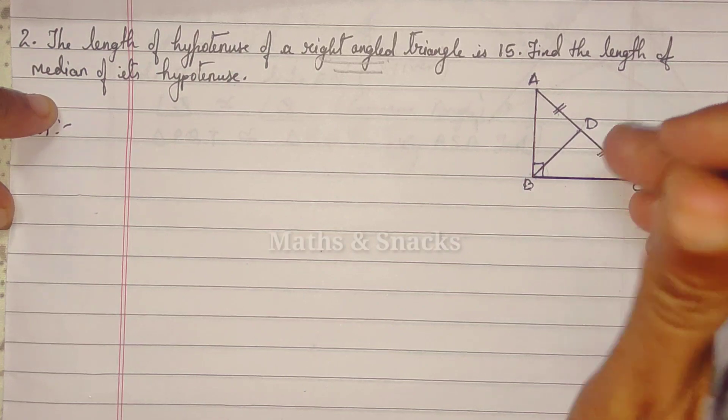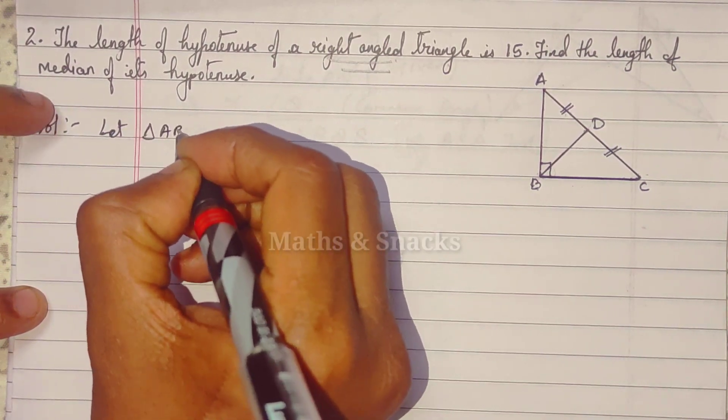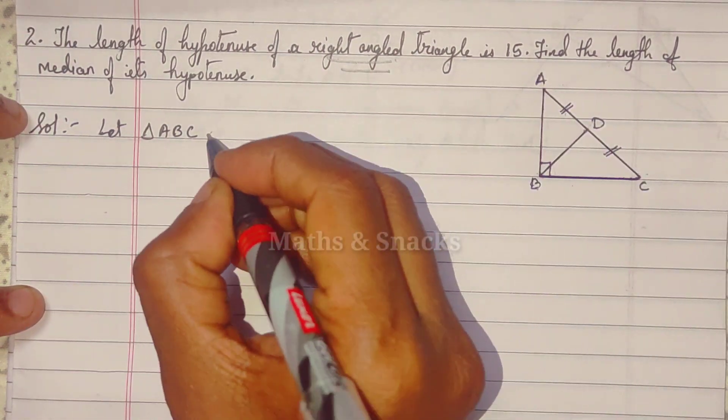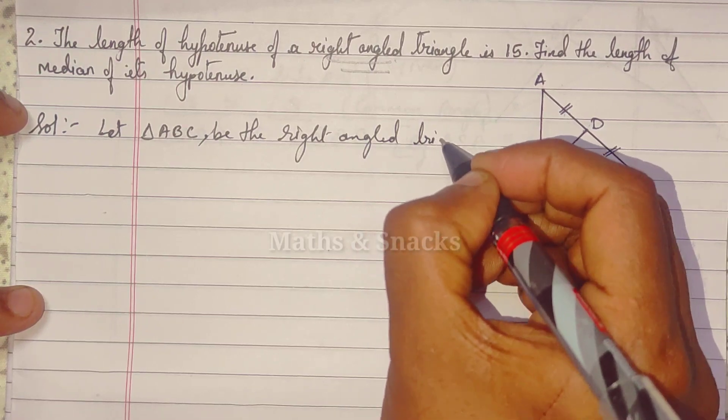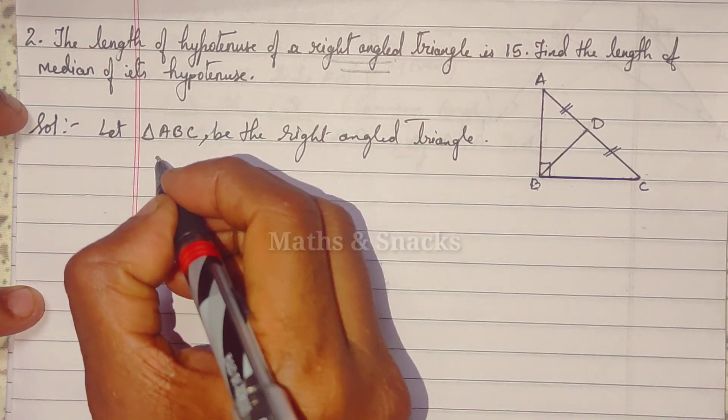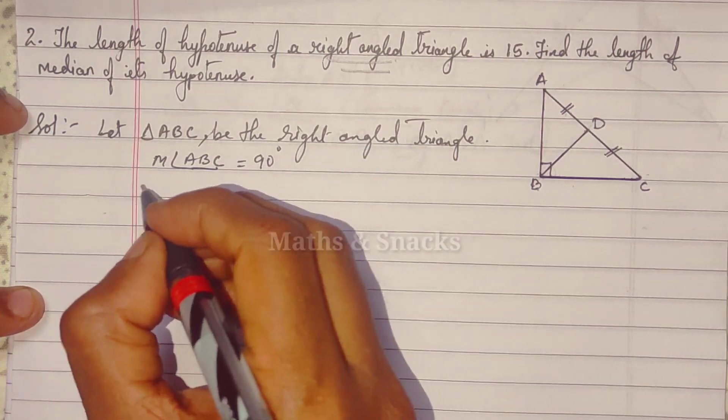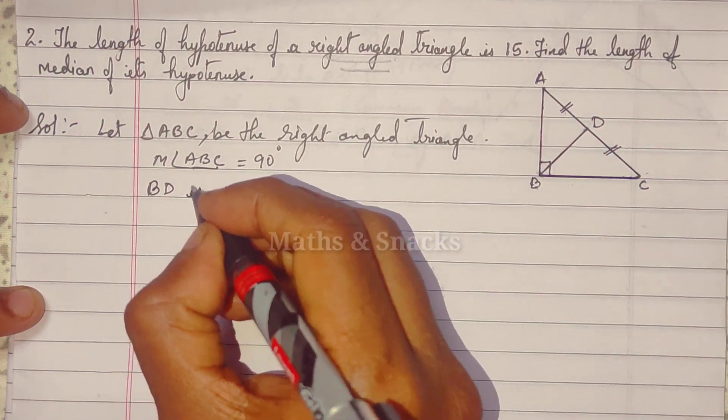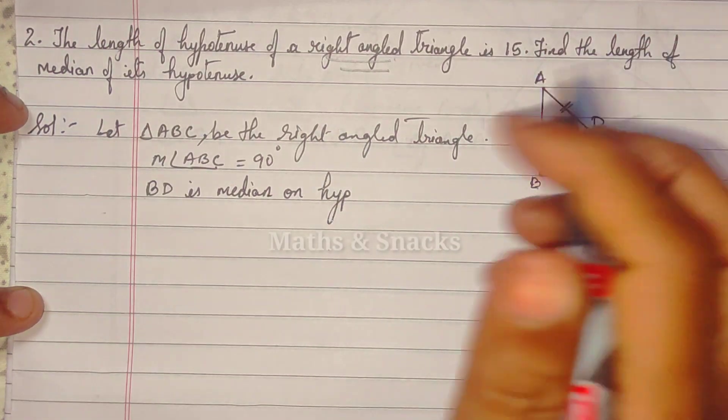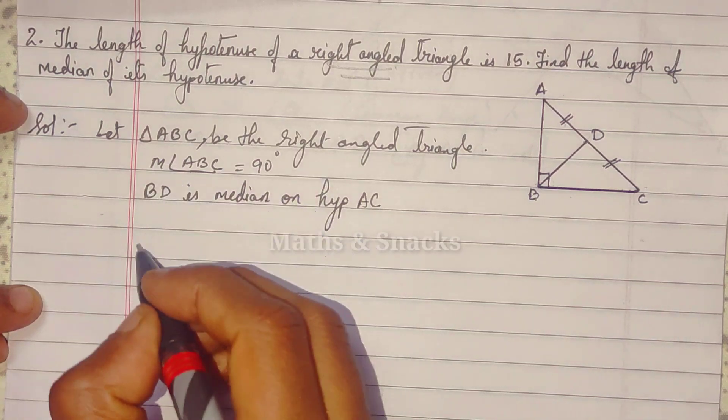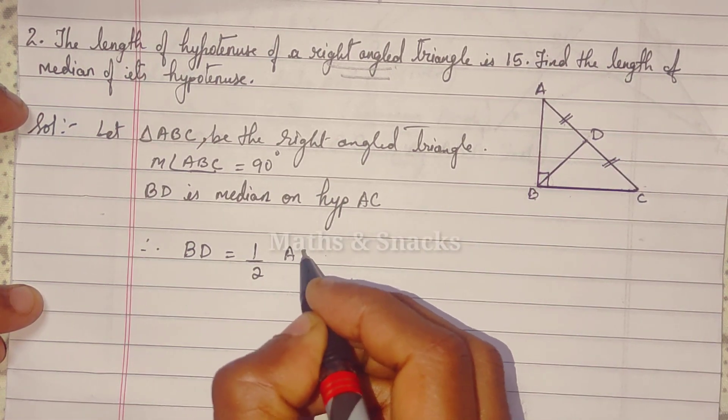Now, what are they saying? Find the length of its hypotenuse. So let triangle ABC - this triangle will be ABC - be the right-angled triangle. Okay? Because the figure was not given, that's why we are writing like this. And measure angle ABC is 90 degrees. Okay? So, and BD - this BD - is the median. That is equal to half of AC. This is a median formula. BD is equal to half of AC. This is a fixed formula.